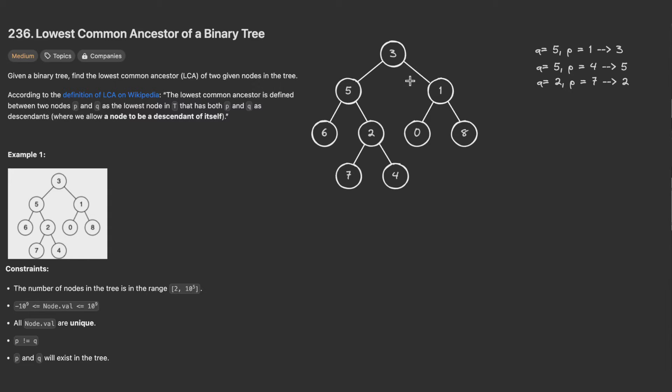Here assuming we want to find the LCA of 5 and 1, which is this one and this one, we want to return the value or the node with value 3. We will be using a DFS, a depth first search. DFS we will go left and then right to find the elements we are looking for. We start from the root node.